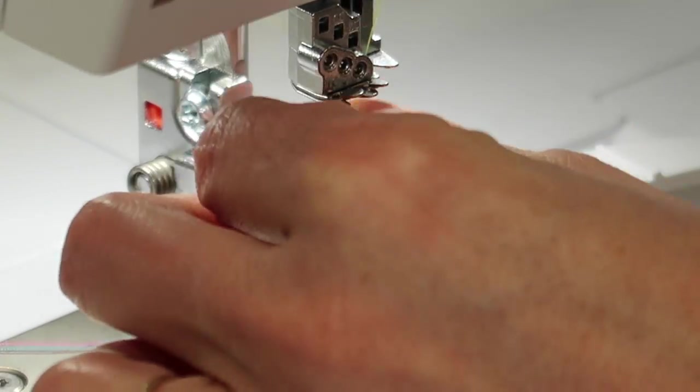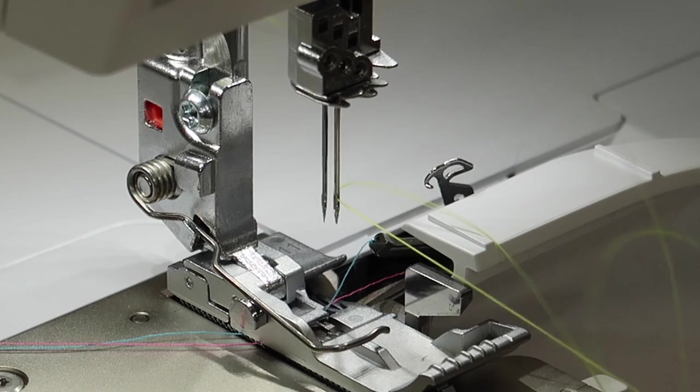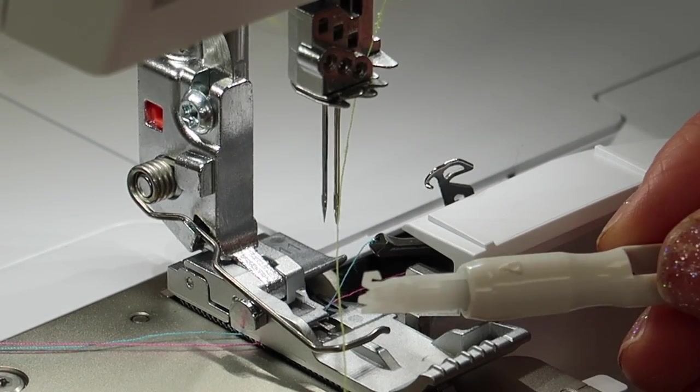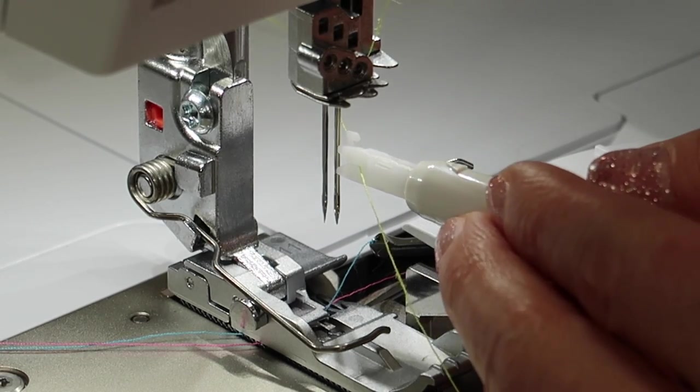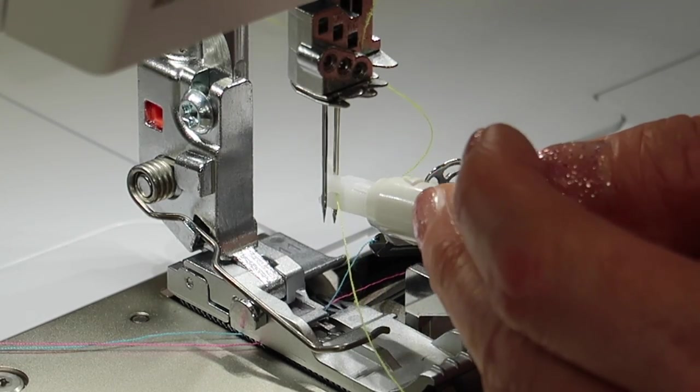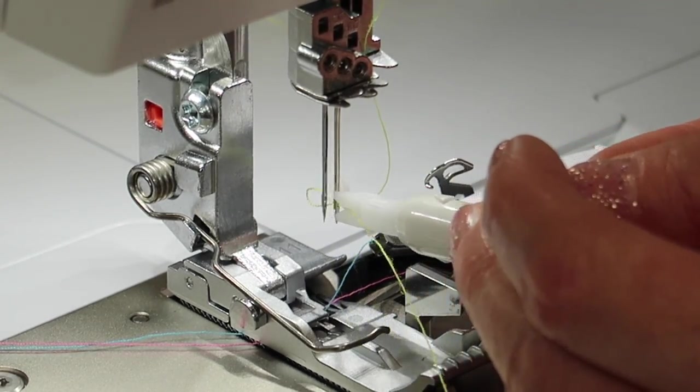So let's do that one more time so you can see it in one motion. Find the arrow, place the thread crosswise, put the needle threader halfway in until the tongue sits in the groove, plunge it in and pull it through.